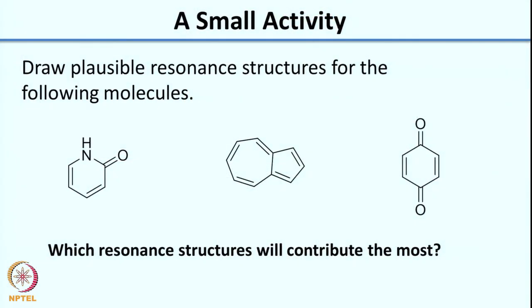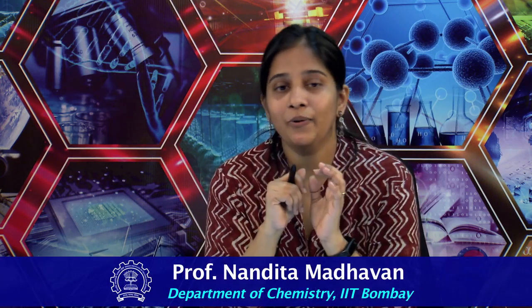Before we close this lecture, I would like you to do a mini homework: draw plausible resonance structures for the three molecules shown on the screen and figure out which resonance structure will contribute more for each. Remember the rules of resonance and use arrow pushing to clearly show each structure. If you have doubts, take it up in the discussion forum, but first spend the effort yourself. We will see you in the next lecture where we will look at the answers to this problem.